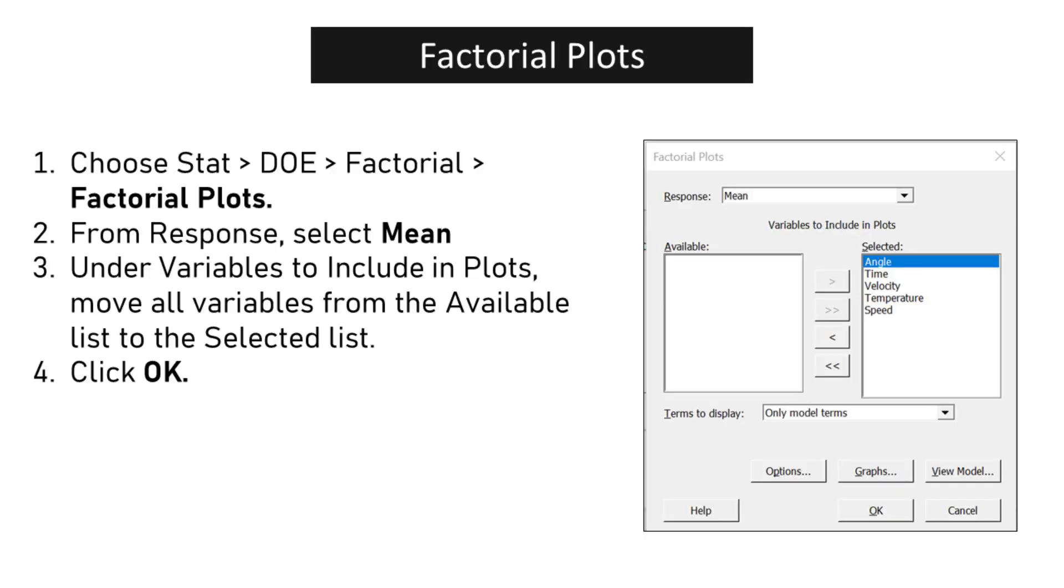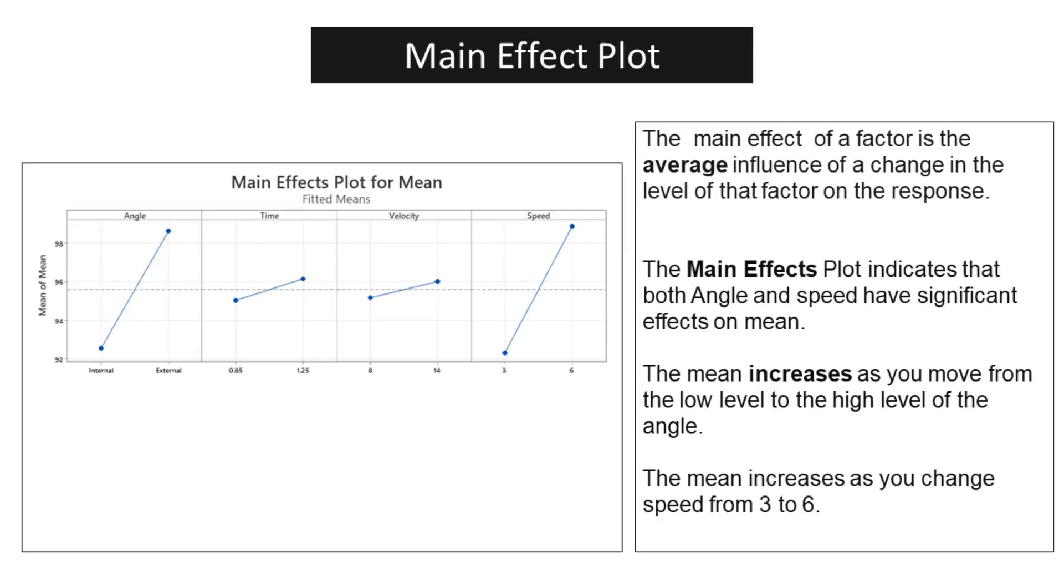Choose STAT, DOE, factorial, factorial plots. From Response, select Mean. Under Variables to include in plots, move all variables from the available list to the selected list. Click OK. The main effect of a factor is the average influence of a change in the level of that factor on the response. The main effects plot indicates that both angle and speed have significant effects on mean. The mean increases as you move from the low level to the high level of the angle. The mean increases as you change speed from 3 to 6.